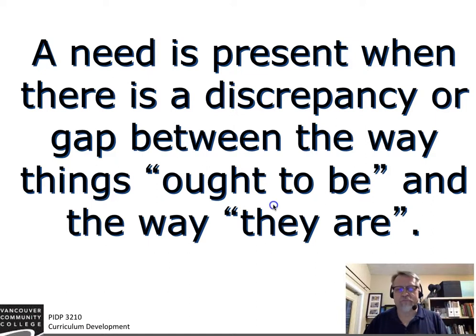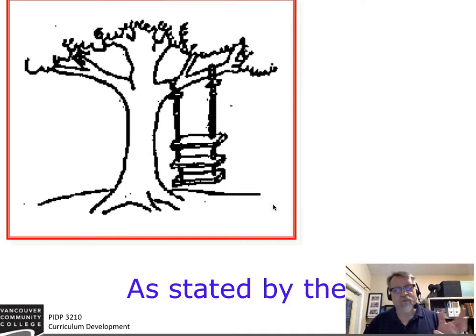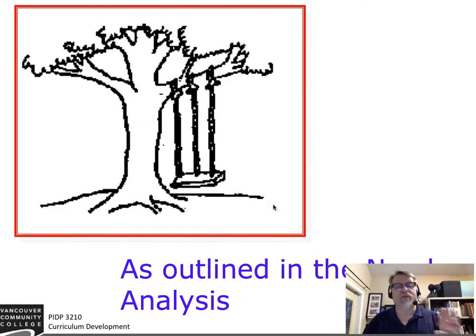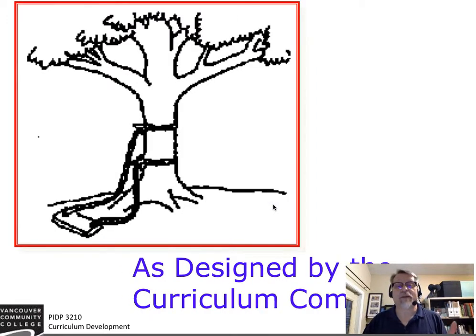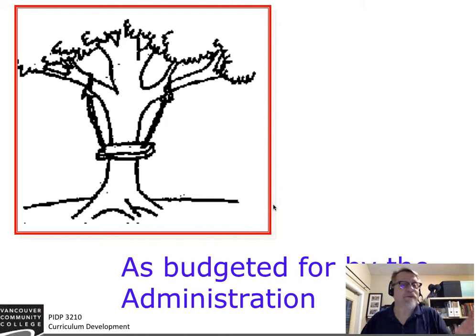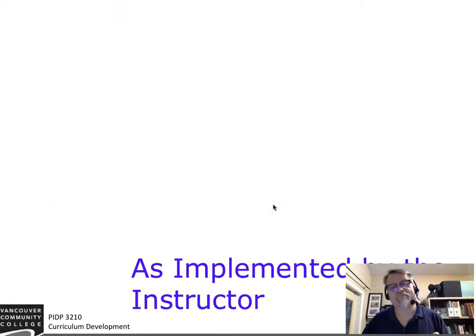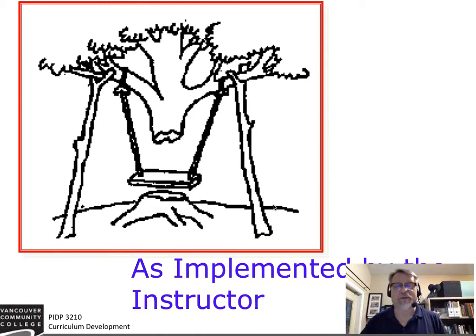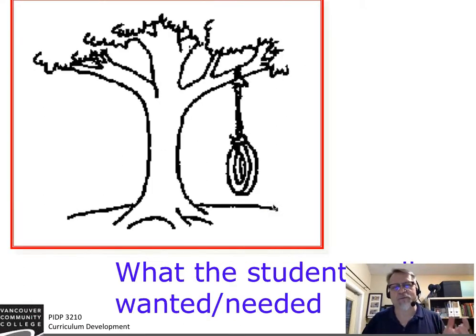Consider the following. This is what the agency stated they wanted. This is what the needs analysis said was required. This is what was designed by the curriculum committee. This is what the administration had budgeted for. And this is what the instructor finally was able to resolve after sorting out all the details. But the reality is, this is what the student really wanted.